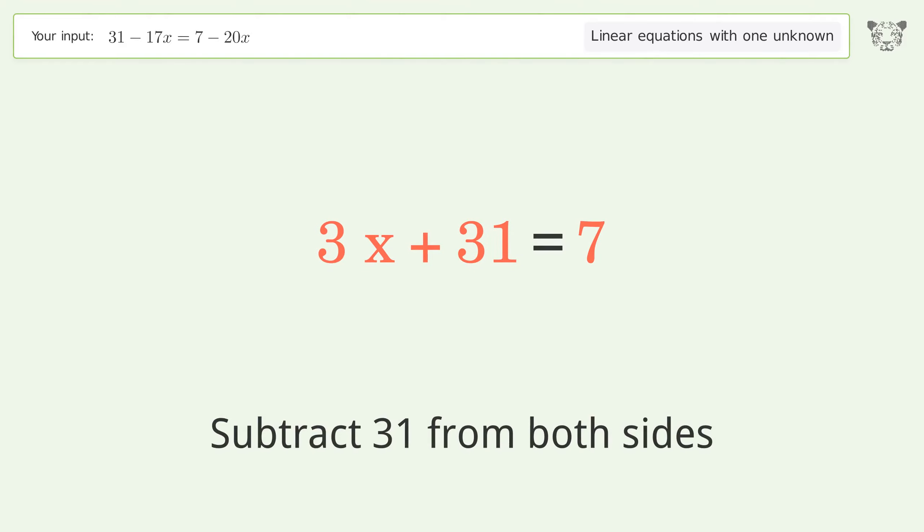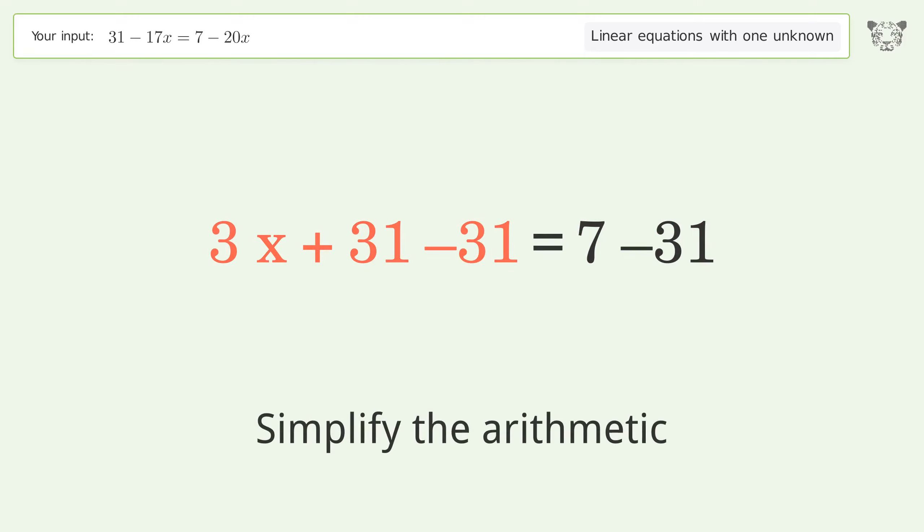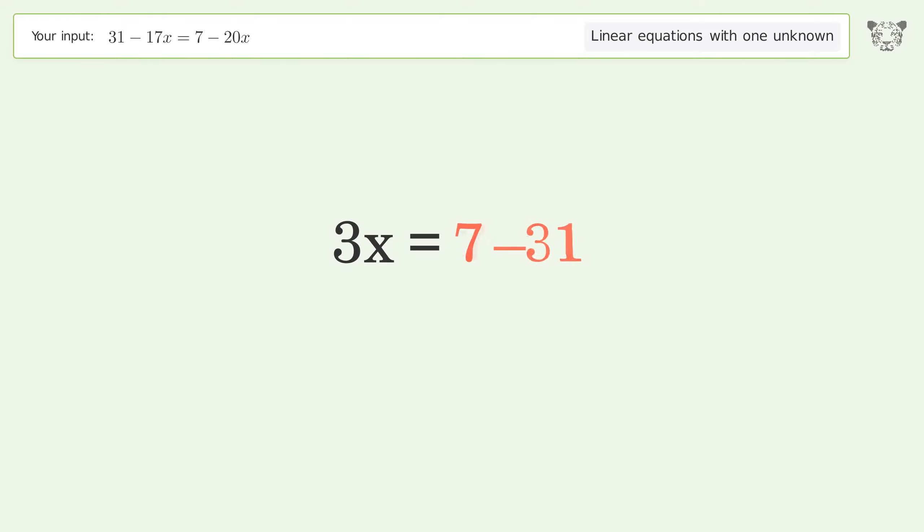Group all constants on the right side of the equation. Subtract 31 from both sides. Simplify the arithmetic.